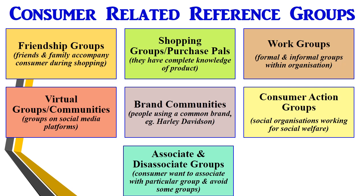Then there are brand communities, which have people using a particular brand. The famous Harley group is an example — group members share the same brand bike and clothing, and to promote this group, the company has launched a range of clothing, accessories and even crockery items. There are also consumer action groups working to support common causes, such as social organizations providing social benefits to the community, and they have a great influence on consumer buying behavior.